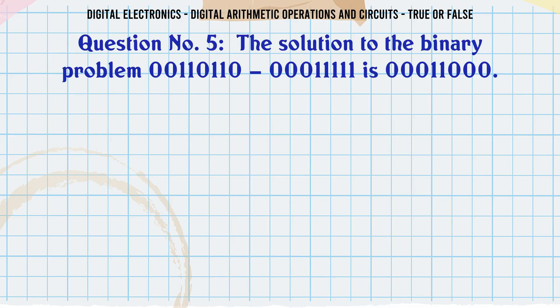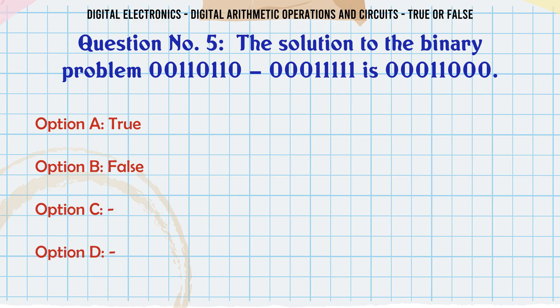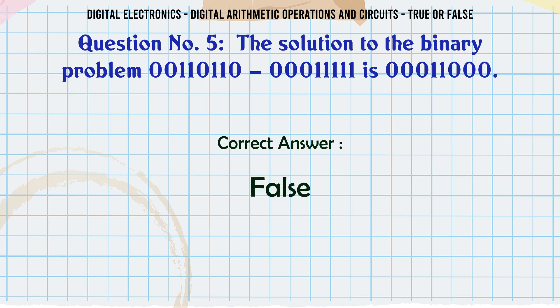The solution to the binary problem 00110110 minus 0011111 is 0011000. True or False? The correct answer is False.